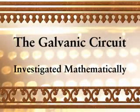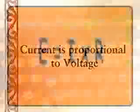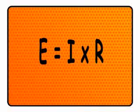Ohm's principal discovery was that the amount of electrical current through a metal conductor in a circuit is directly proportional to the voltage impressed across it, for any given temperature. Ohm expressed his discovery in the form of a simple equation describing how voltage, current, and resistance interrelate. E equals I times R. In this algebraic expression, voltage E is equal to current I multiplied by resistance R.